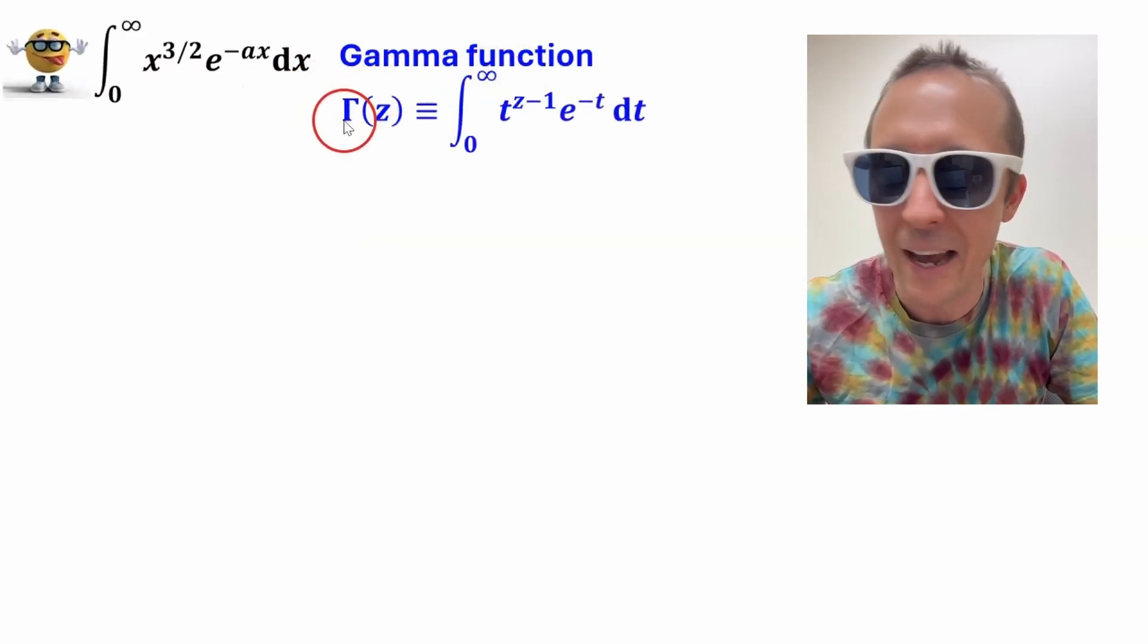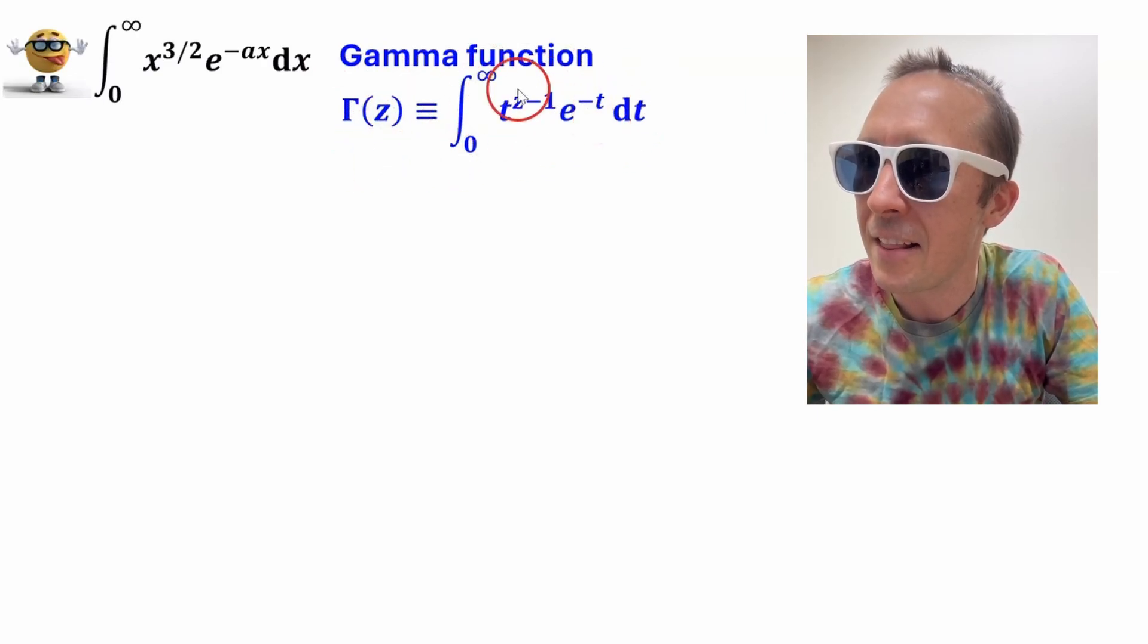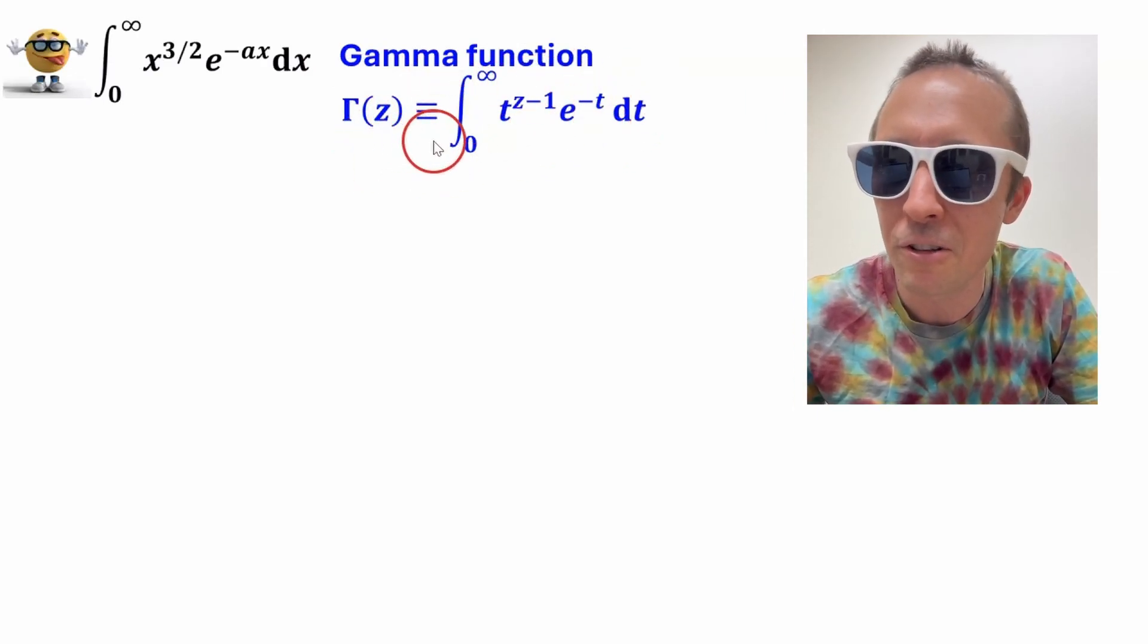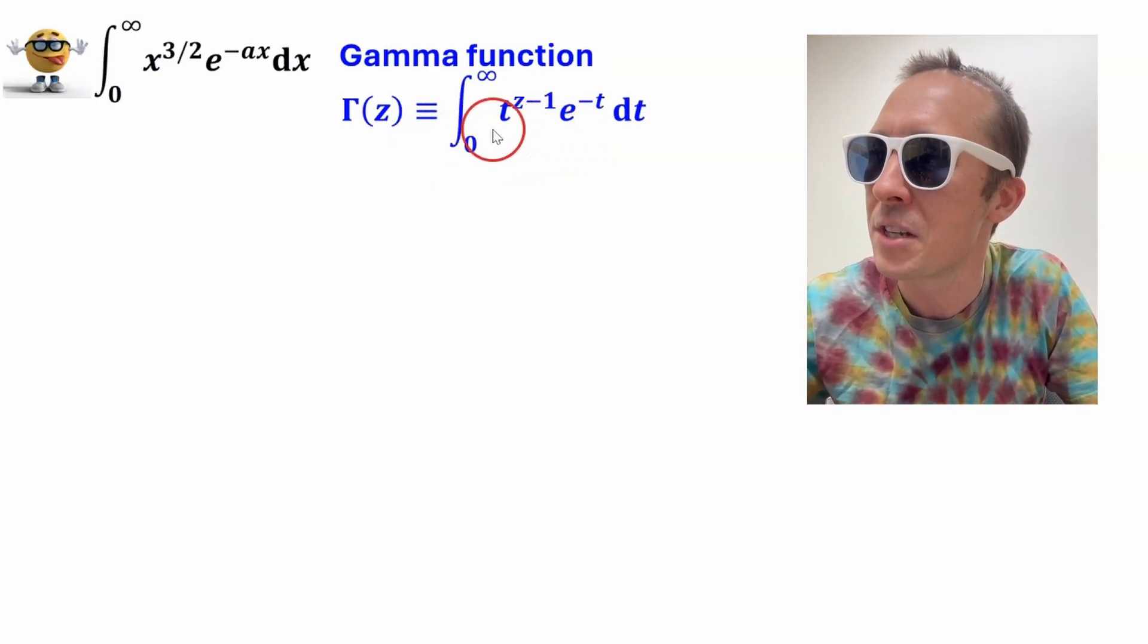This capital letter gamma, looks like a half t, is equal to this integral right here, and this is a very famous function. It's used in physics and engineering. It generalizes the factorial for imaginary and real numbers, but anyways,